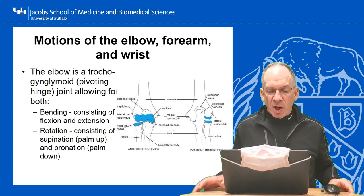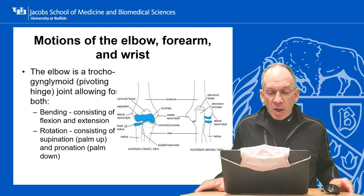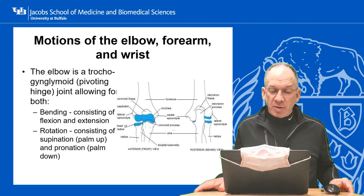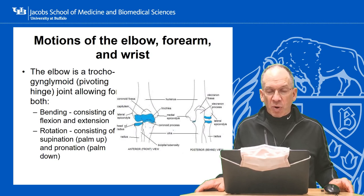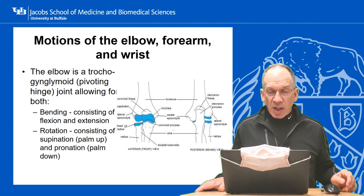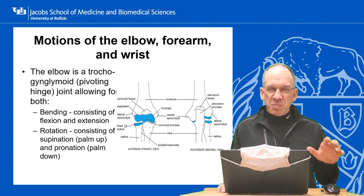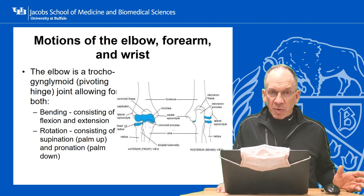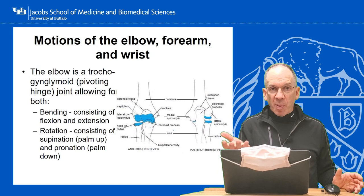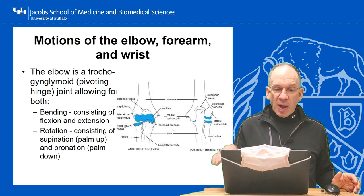Quick review of anatomy. The elbow is a trochoginglymoid joint, which means pivoting hinge — also much easier to say. It allows for bending: flexion and extension. It also allows for rotation. In forearm rotation, the radius rotates back and forth around the ulna. The ulna is more or less the center of rotation of the forearm. The two motions of rotation are supination, which is palm up, and pronation, which is palm down.